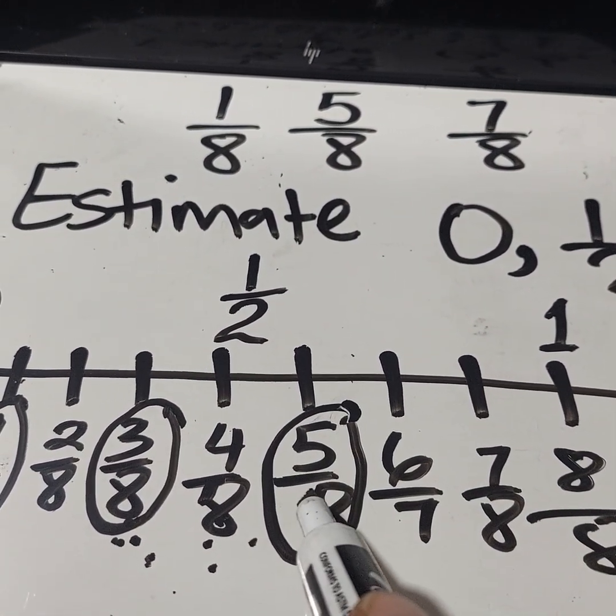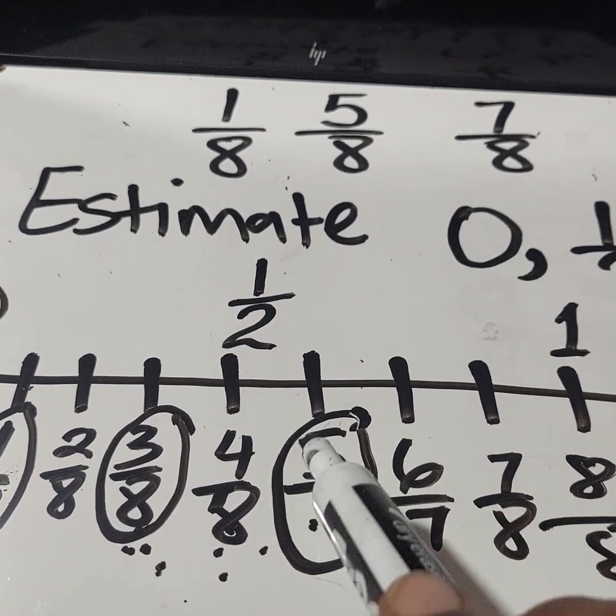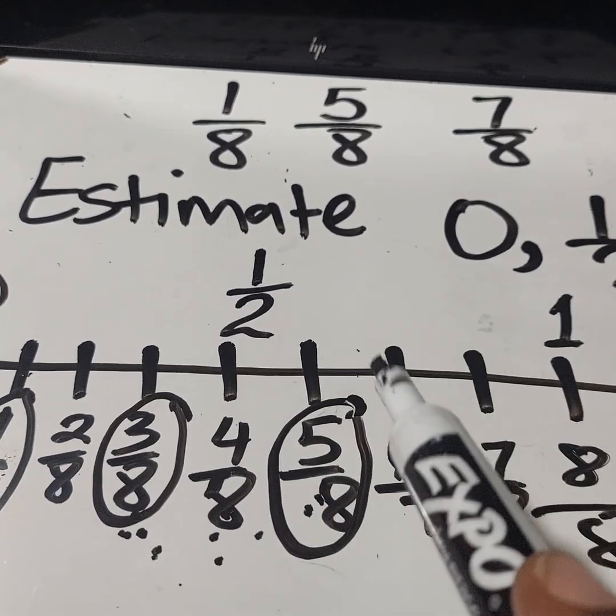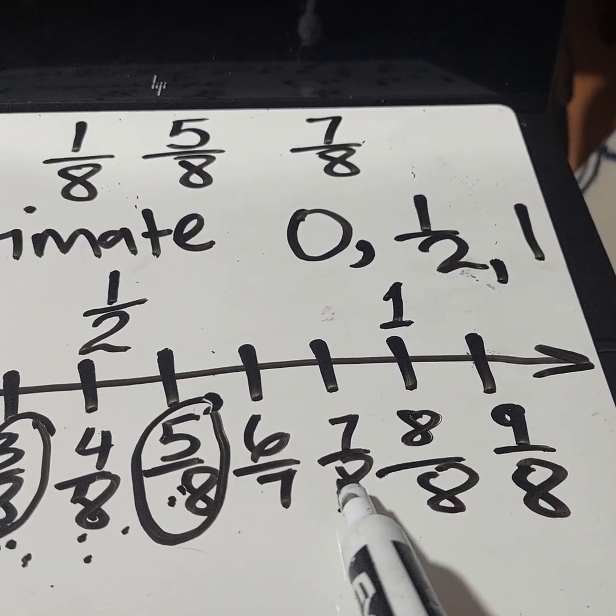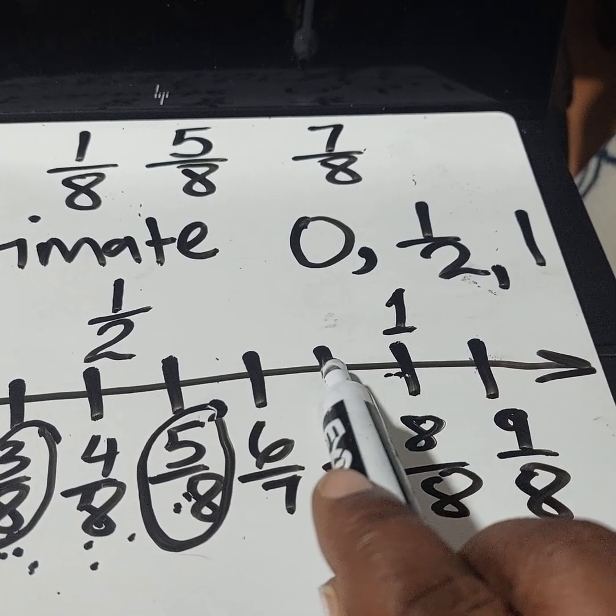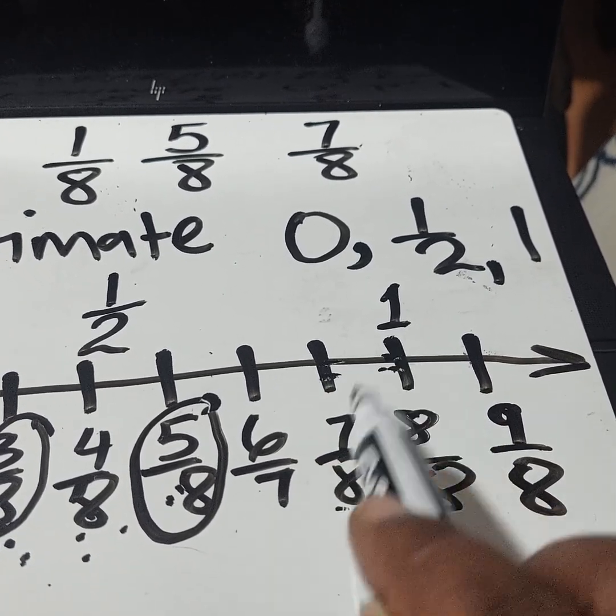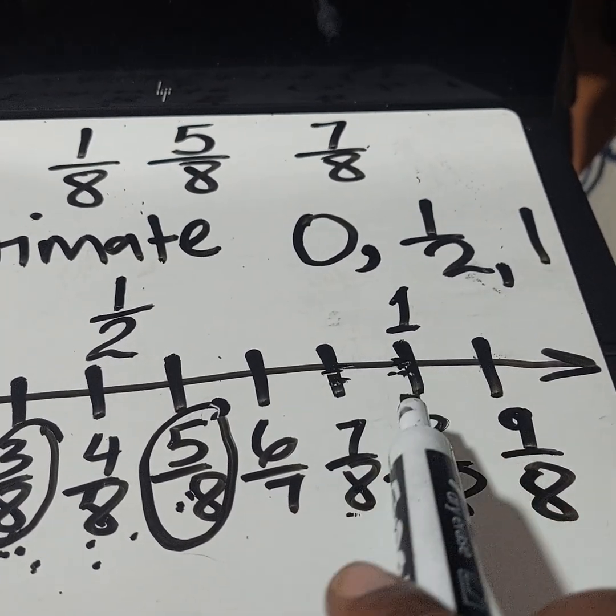Let's take a look at seven eighths. So if I were to estimate five eighths, I would say more than a half, but technically we're doing three benchmarks. So five eighths would be about a half. Seven eighths, on the other hand, is closer to one whole in terms of distance. It's only one space away from it. Seven out of eight is one space away from it. Therefore, I could say that seven eighths is close to one whole.